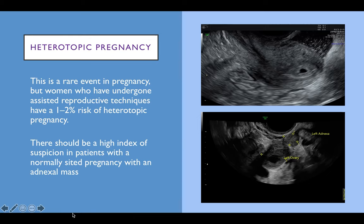Heterotopic pregnancy is where there is a normal intrauterine pregnancy and an ectopic pregnancy — most commonly a tubal ectopic — in the same patient. This is a rare event, but it has become much more common with assisted reproductive techniques; there is a one to two percent chance if more than one embryo is transferred. There should therefore be a very high index of suspicion in patients with a normally sited pregnancy and an adnexal mass, and this is why we should always check the adnexa when scanning.